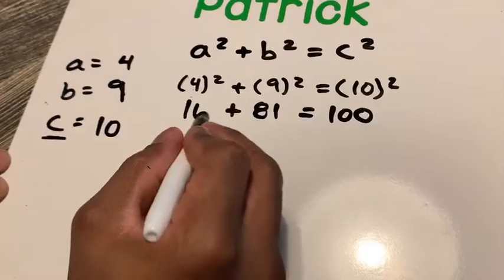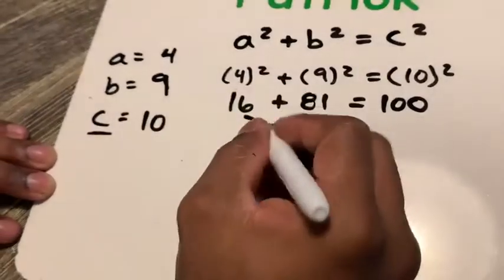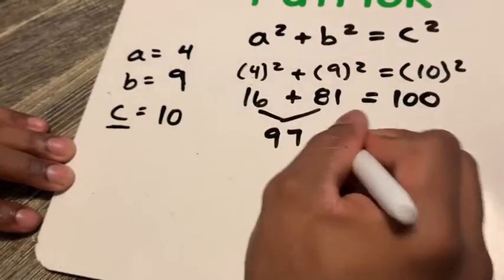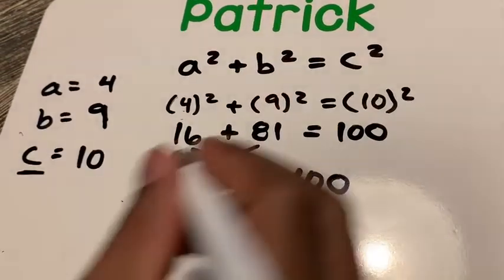Next, we just add those values. 16 plus 81 is going to give me 97. And then you ask yourself, does 97 equal 100? In this case, it does not.